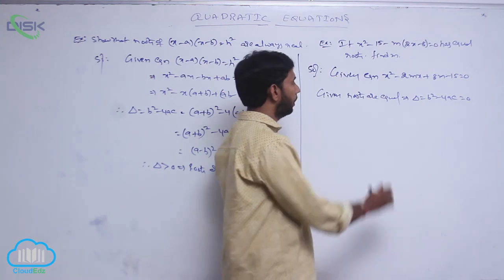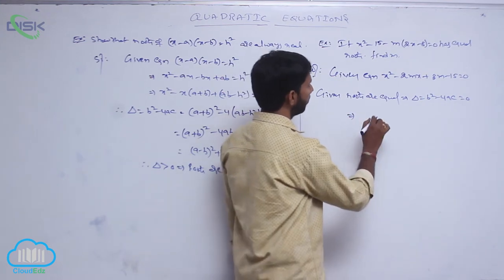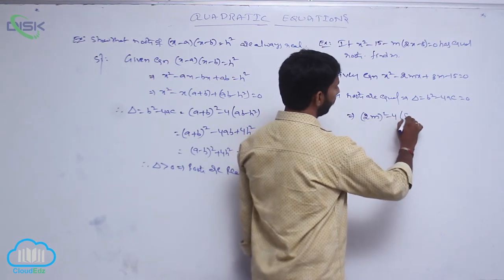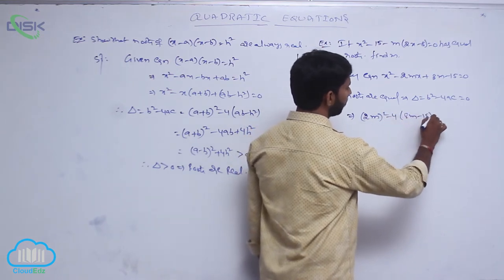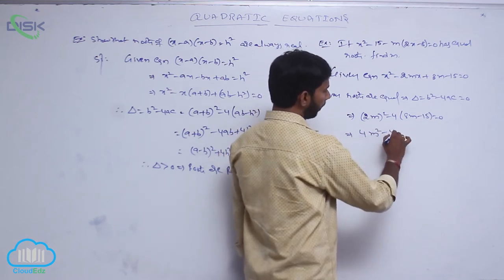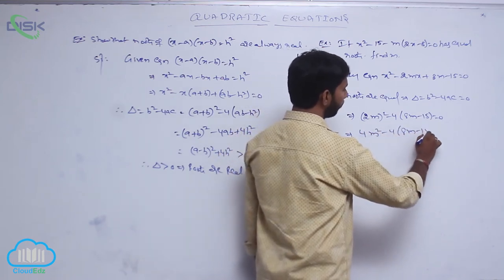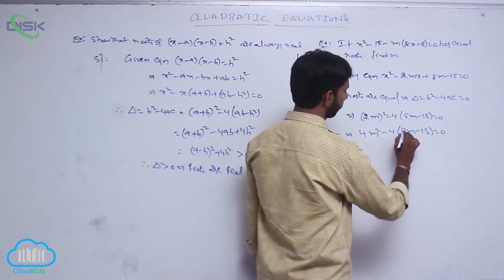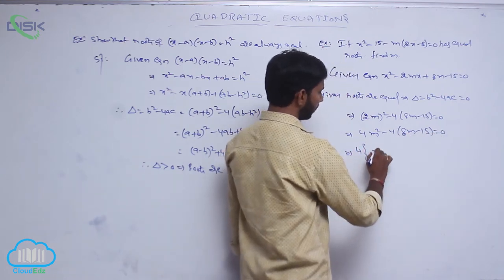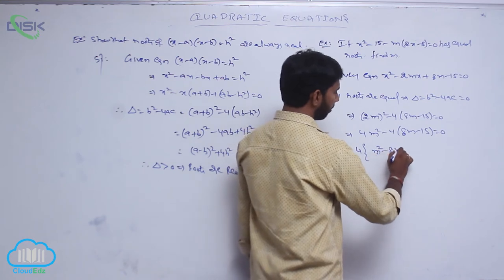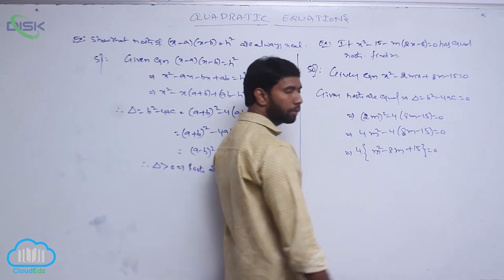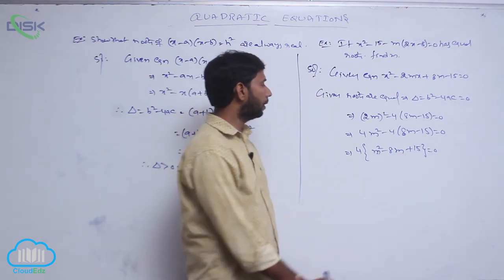Applying the discriminant: (2m) whole square minus 4 into (8m minus 15) equals 0, that is 4m square minus 4(8m minus 15) equals 0. Taking 4 as common, we get m square minus 8m plus 15 equals 0.